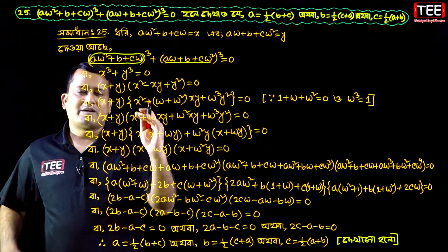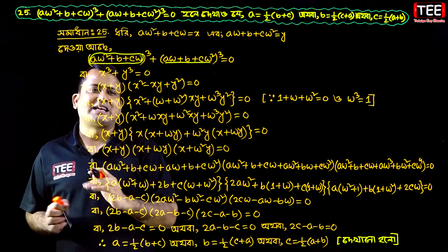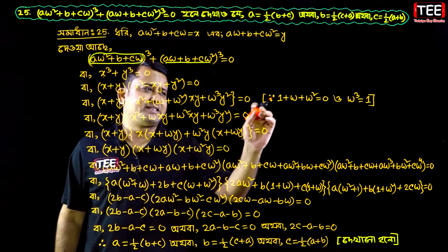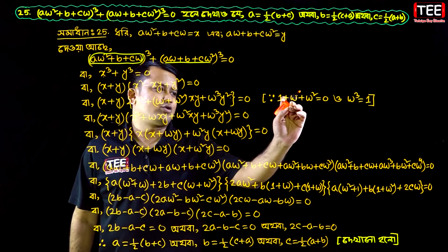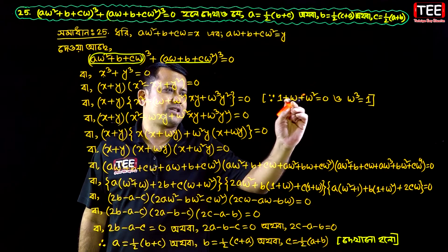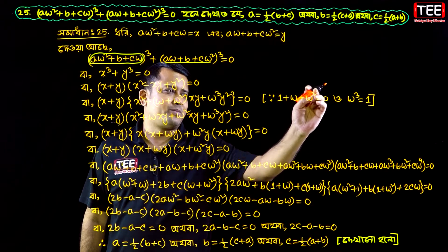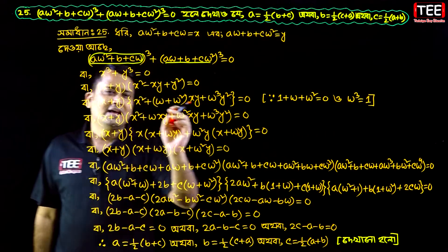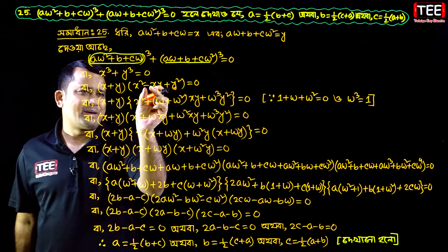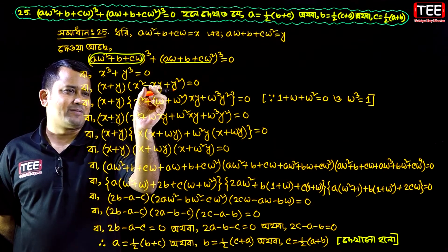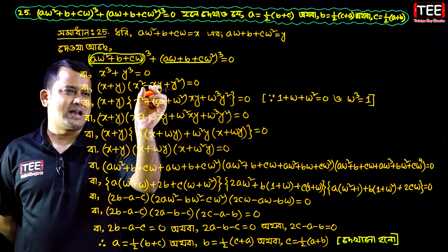Now let us use the proven identity: 1 plus omega plus omega squared equal to zero. Therefore omega plus omega squared equal to minus one. So here we get minus x·y.